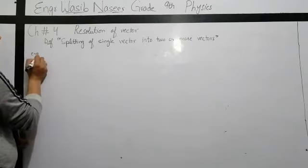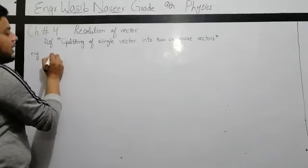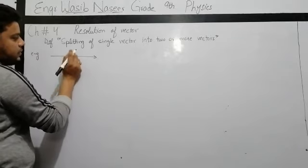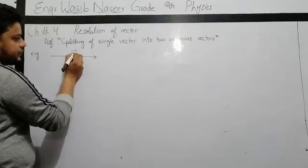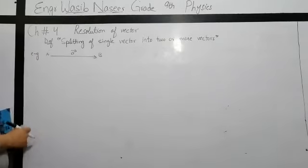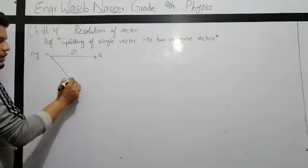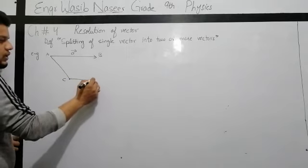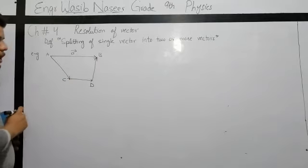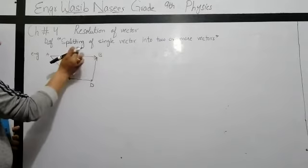I will give you an example. Let us consider a vector A which goes from point A to B. Now I will separate it. First I will go from A to C, then from C to D, then from D to B. The result of that process is the same as the original vector A to B.